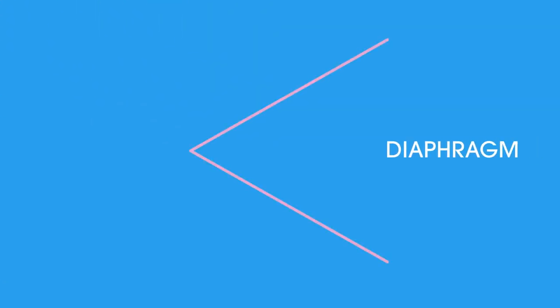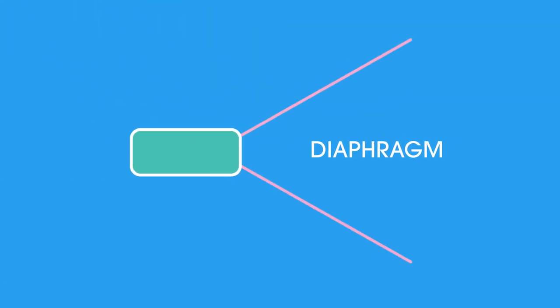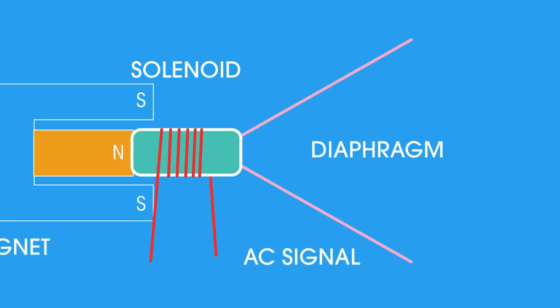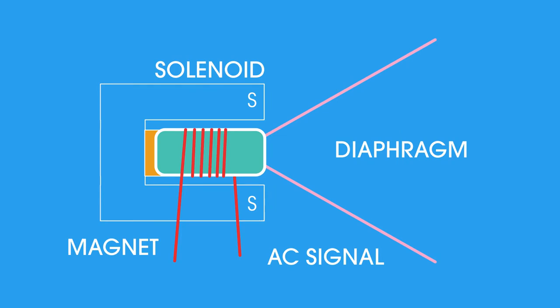A cardboard cone, called a diaphragm, is connected to a tube with a wire coil wound around it. You may recognize this as a solenoid. The wires carry the oscillating AC input. The coil fits snugly into the circular cavity of the magnet.